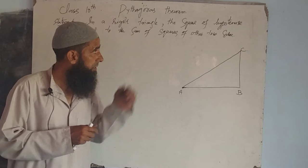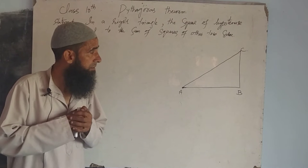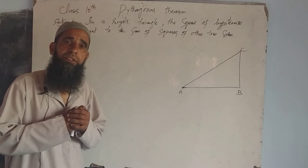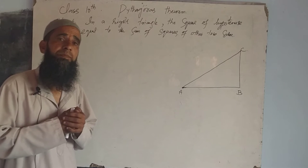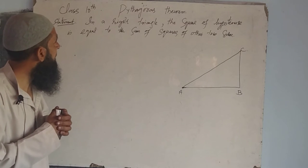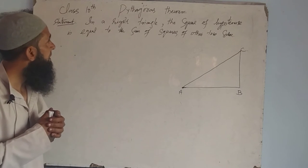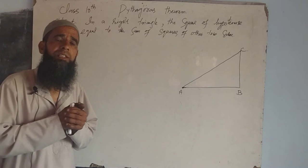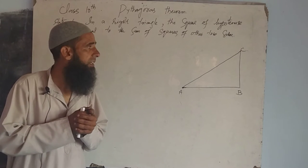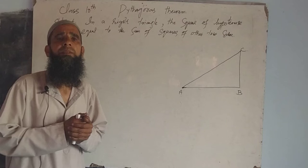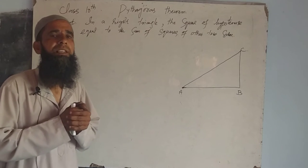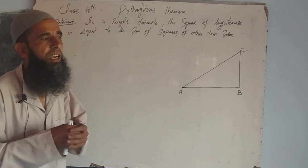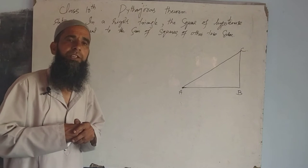Now we will discuss in this lecture the important theorem that is the Pythagorean theorem. It is a simple proof that we will discuss by using trigonometric identities as well as trigonometric ratios.